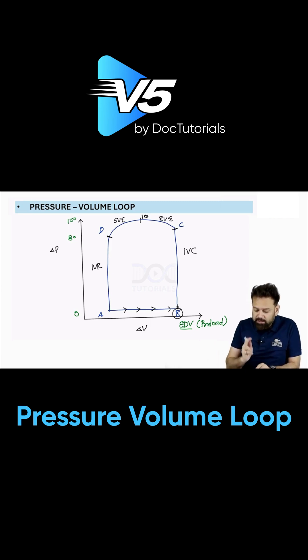Once again, from A to B, what is happening? You can write ventricular filling. From C to D, you can say ventricular ejection. Volume is decreasing. It can be rapid, it can be slow. And from B to C, it is isovolumetric contraction. From D to A, isovolumetric relaxation.